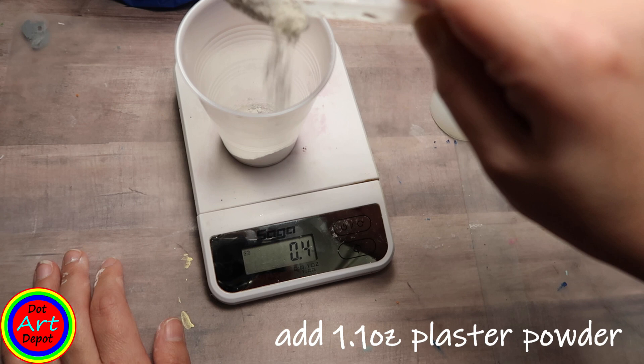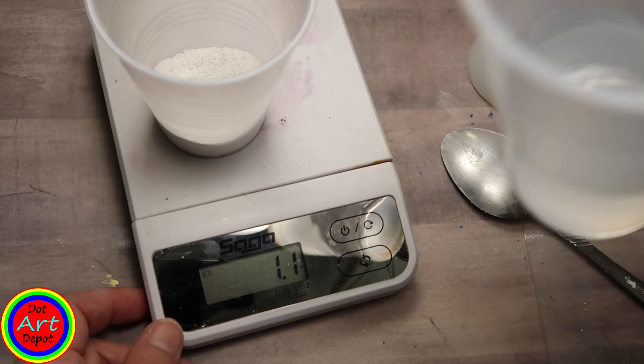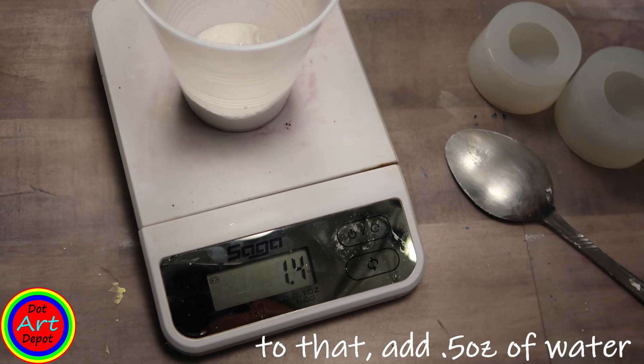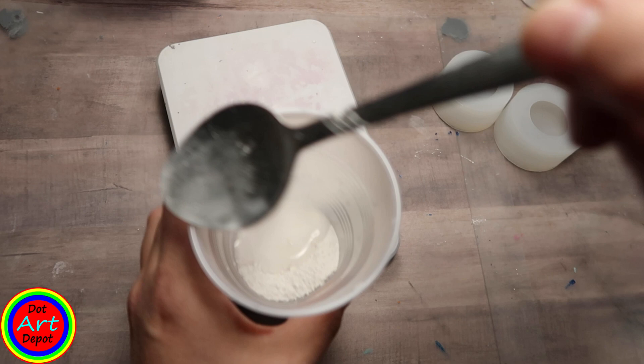Place your cup on your scale and tare the scale back to zero. You're going to add 1.1 ounces of plaster powder, and to that you're going to add 0.5 ounces of water. You're looking for a total weight of 1.6 ounces, and mix it really well.